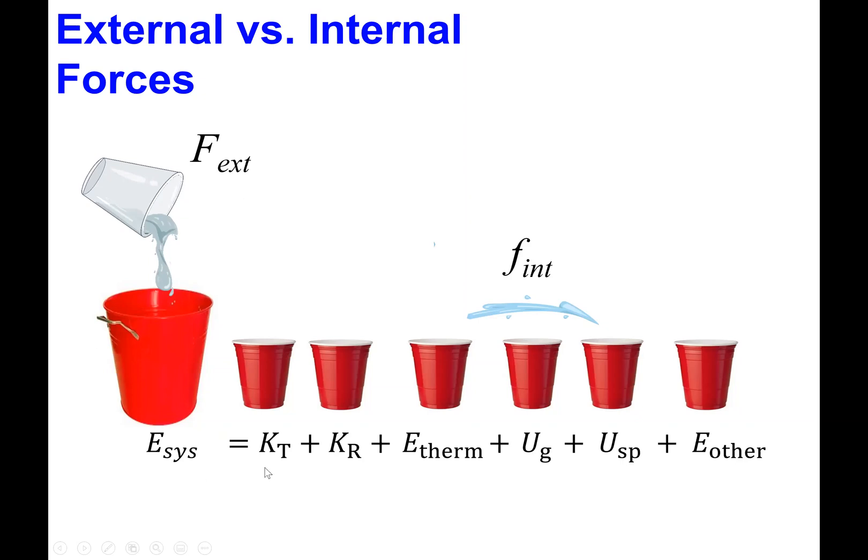And then we might think of the sub-quantities, the quantities that make up the total energy. In other words, the kinetic energy of translation, kinetic energy of rotation, thermal energy, potential energy due to gravity, potential energy due to a spring internally, and then possibly other types of internal energy.